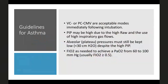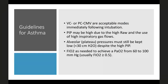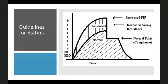Volume control or pressure control modes are acceptable immediately after intubation. Peak pressures will be high due to very high resistance from severe bronchoconstriction and use of high inspiratory gas flows — expect peak pressure of 50–55 cmH2O. However, alveolar pressure (plateau pressure) must remain below 30 cmH2O. FiO2 should be liberal — start at 100% oxygen, then titrate down.